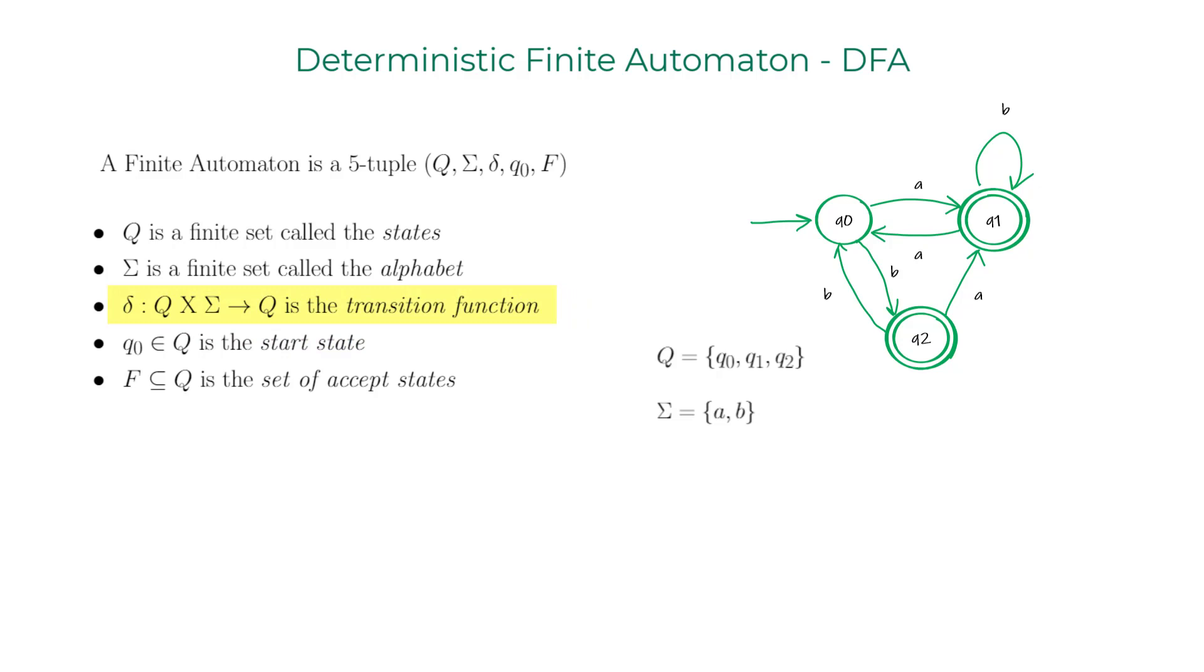Delta is the transition function. We're going to spend some time here. So to discuss this notation, we have Delta which is the Cartesian product of the states and the alphabet. So that is the domain of the transition function and the range is states. To visualize what this function does, let me draw the transition table for this DFA.